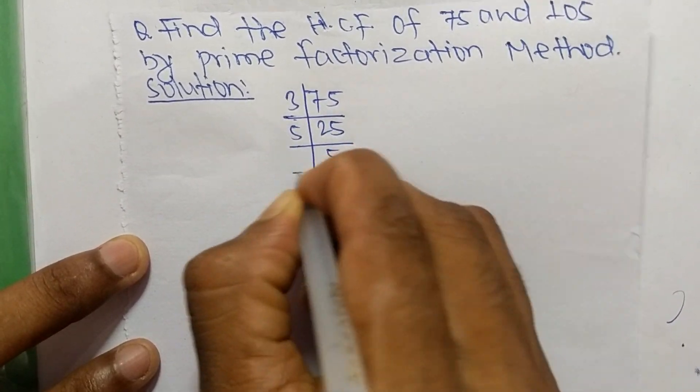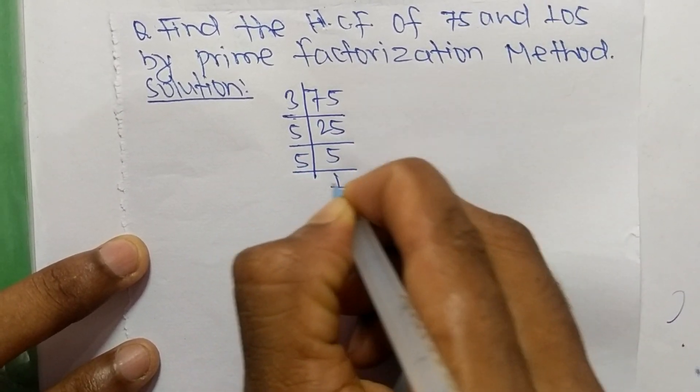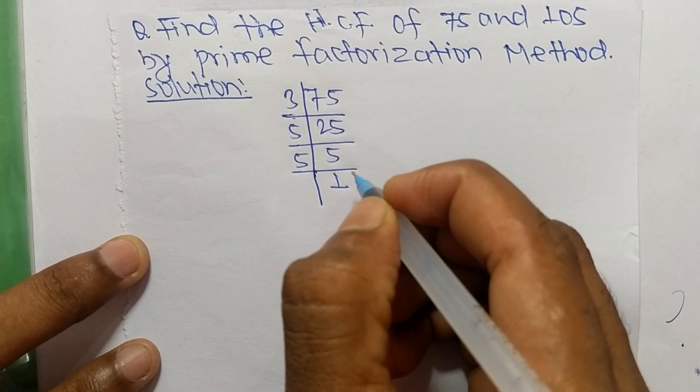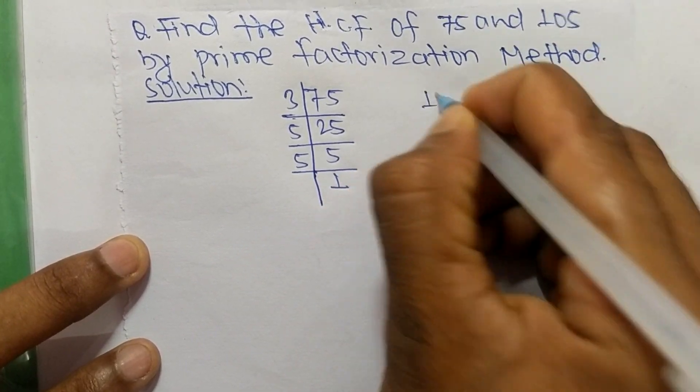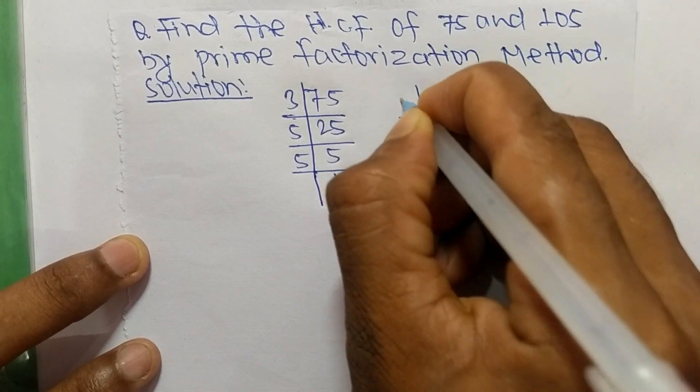times 5 equals 25, and 5 times 1 equals 5. Next, the prime factors of 105 are...